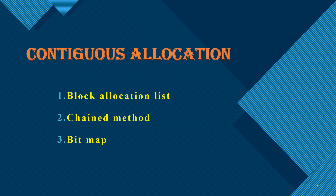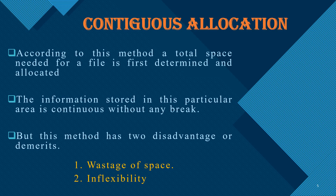Contiguous allocation method means we continuously store the data inside the memory. It can be classified into the block allocation list, chain method, and bitmap method. In the contiguous allocation method, there are certain disadvantages: first is the wastage of space, and the second one is inflexibility.